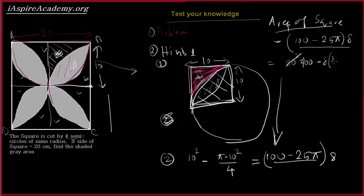8 times 100 minus 25 pi. That equals to 400 minus 800 plus 200 pi. So that is our answer.